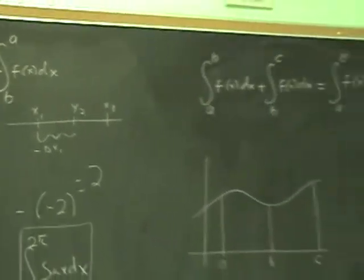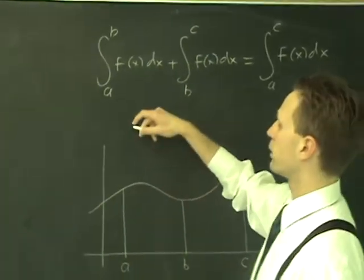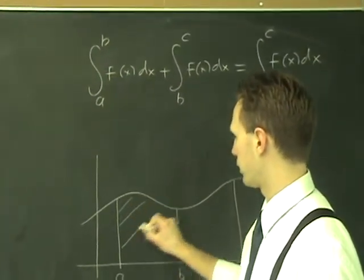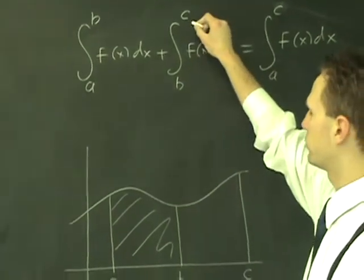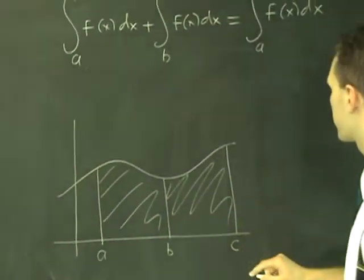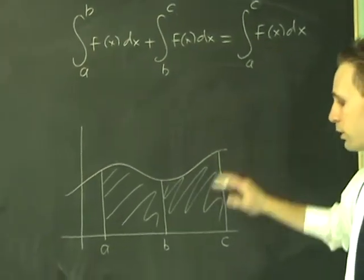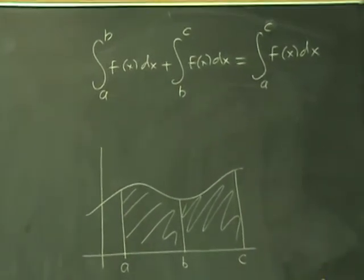This is the last property, sort of a transitive property here. No big thing though. If you integrate a function from A to B, which will give you the area here, and then to it you add the integral from B to C, which is this here, you get the same result as though you had integrated the original function from A straight to C. That's no big deal.